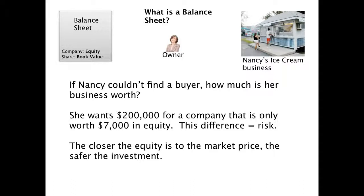That's the margin of safety. This was Benjamin Graham's big thing — Warren Buffett's professor at Columbia. His big thing was margin of safety. If a business didn't have a substantial amount of safety between what the market price was and what the equity was, he was very hesitant to ever buy a company. In this scenario, the equity is actually 3.5% of the market price — that's no safety at all. Let's say you bought this business for $200,000 and it's making $20,000 in net income, then your employee quits and sales start decreasing.